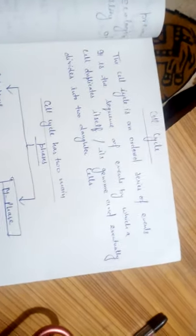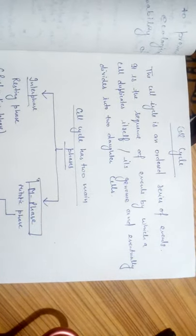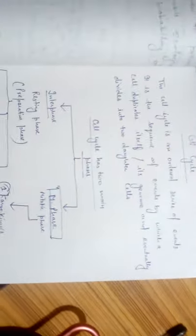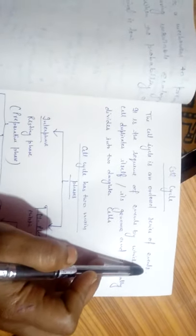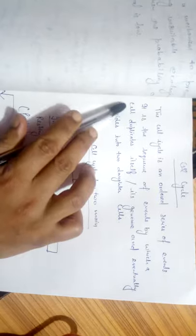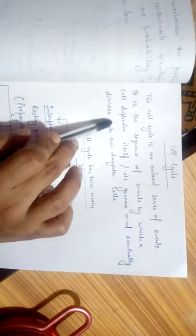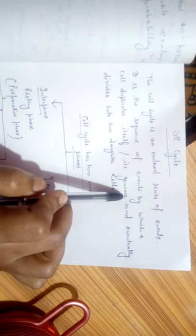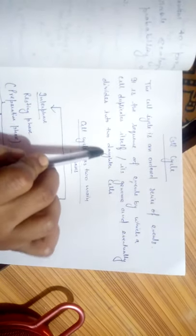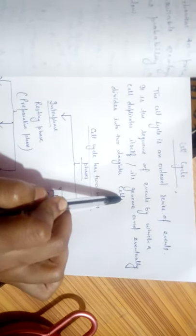Our today's topic is the cell cycle. The cell cycle is a series of ordered events — it is the sequence of events by which a cell duplicates its genome and eventually divides into two daughter cells.